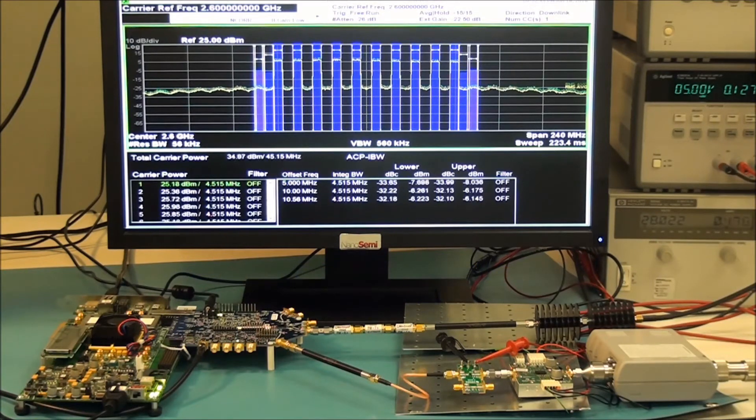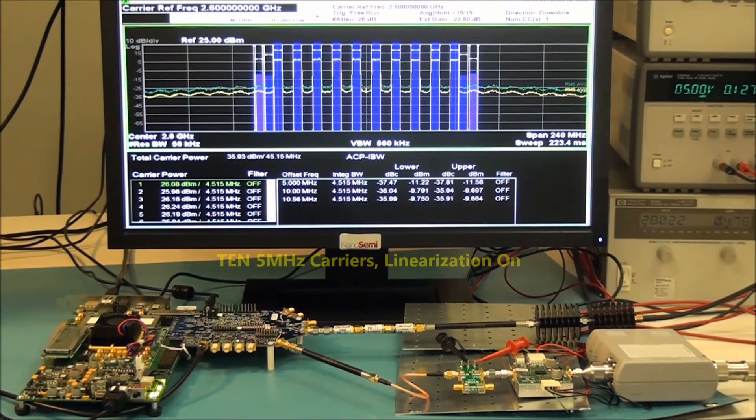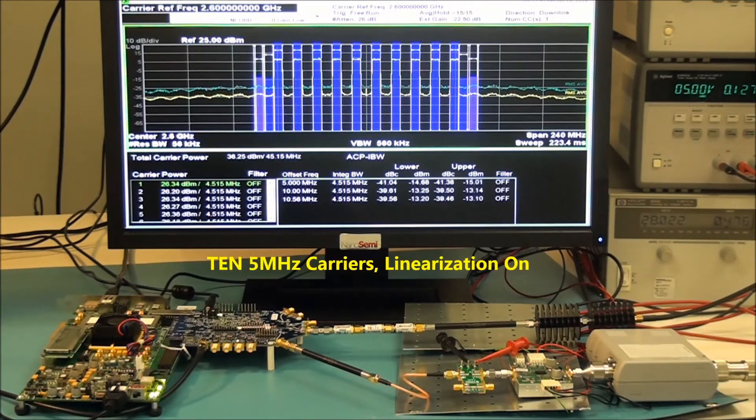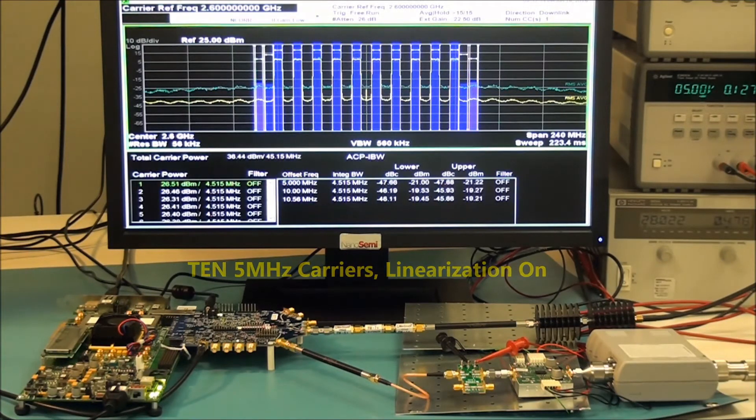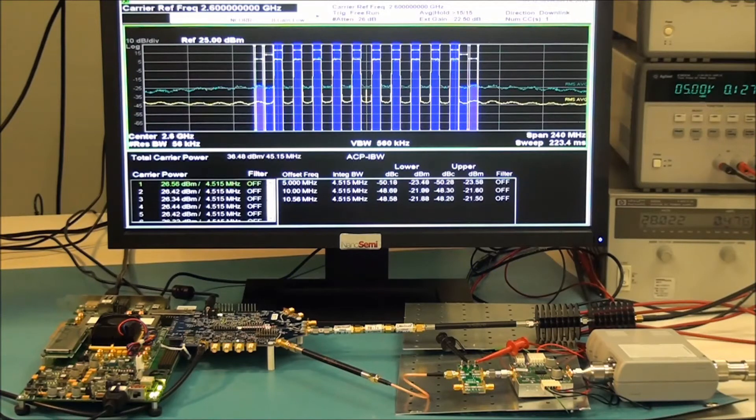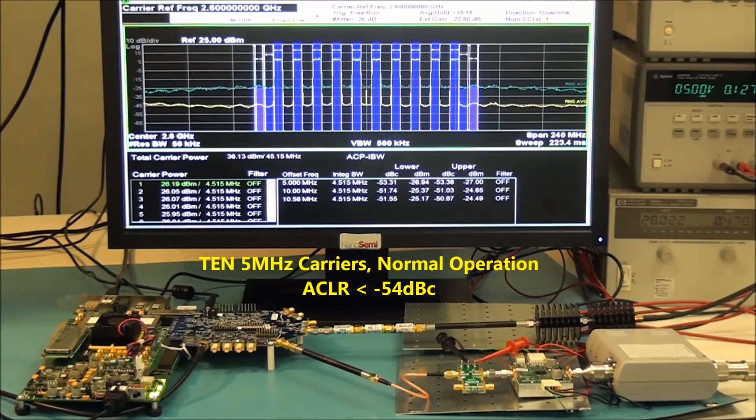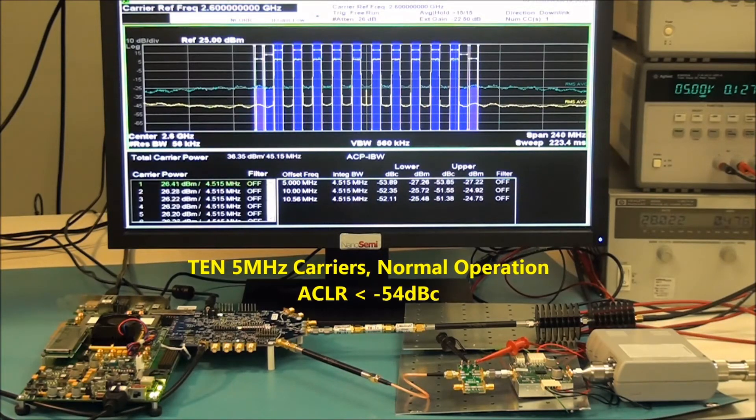The next waveform consists of ten 5 MHz LTE carriers uniformly spaced at 10.56 MHz apart. ACLR improves from minus 33 to minus 54 dBc with corrections.